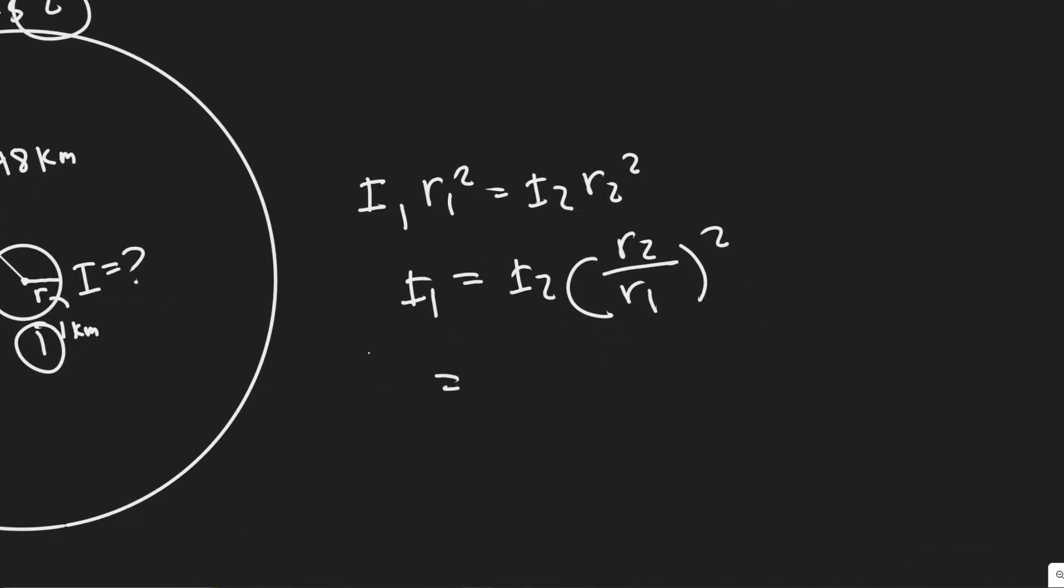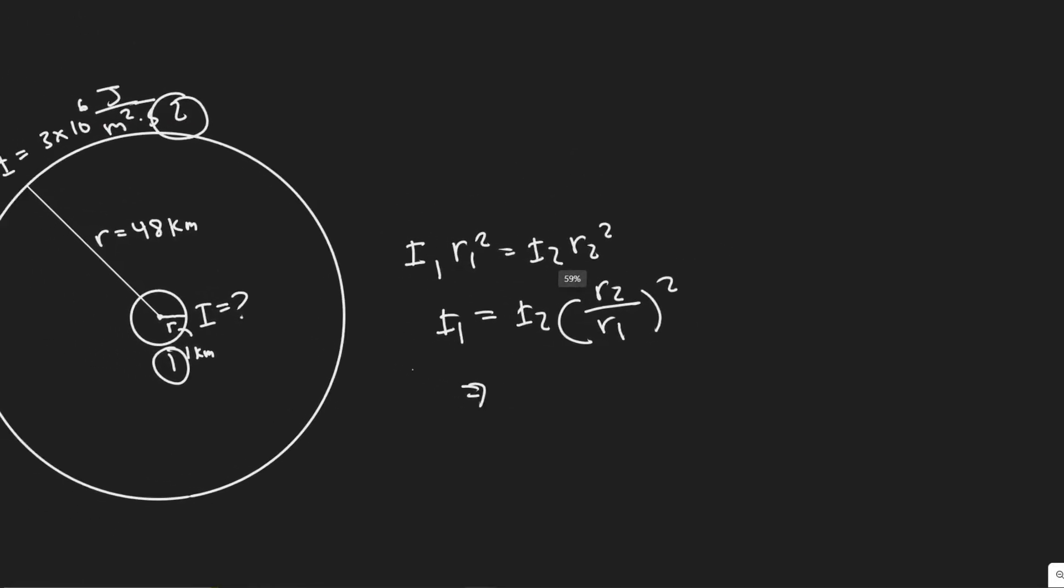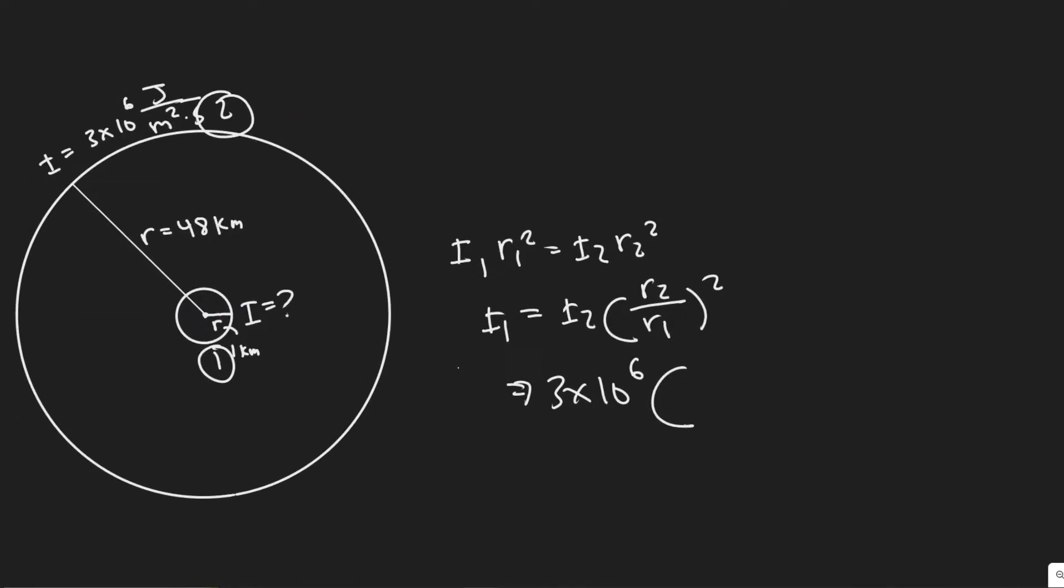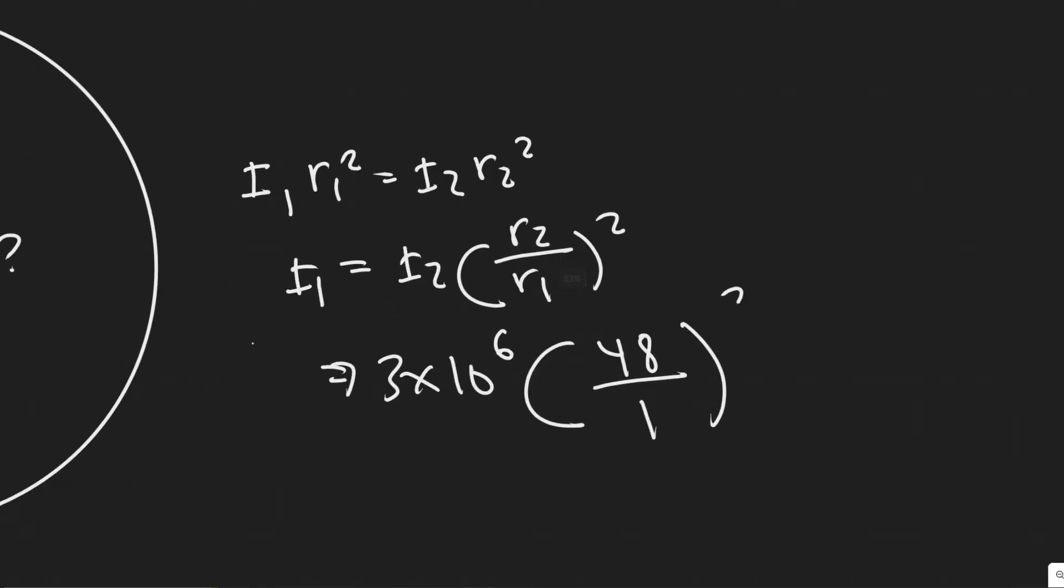And so now at this point, it's really just a matter of plugging it in. So we have 3 times 10 to the 6. And then the units of the R2 we can just leave in kilometers here because they're going to cancel out since we're dividing. So it's 48 at R2 and then just 1 at R1. And so we square this value.